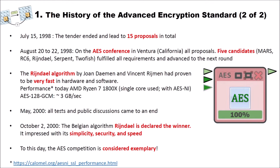In May 2000, all tests and public discussions on the AES conference came to an end. On October 2, 2000, the Belgian algorithm Rijndael by Daemen and Rijmen was declared the winner. The algorithm impressed with its simplicity, security and speed. To this day, the AES competition to find a new successor of DES is considered exemplary. Finding a crypto primitive by a competition and making it open was really a new thing, and later competitions were all inspired by this AES competition.